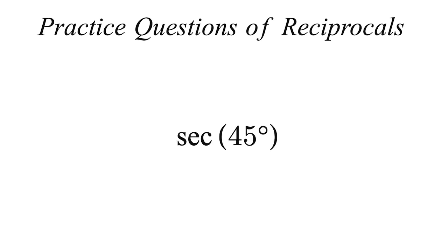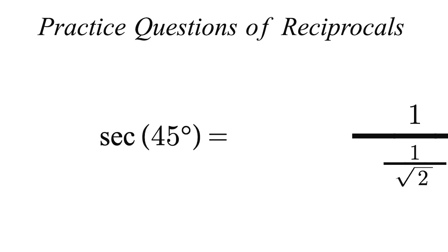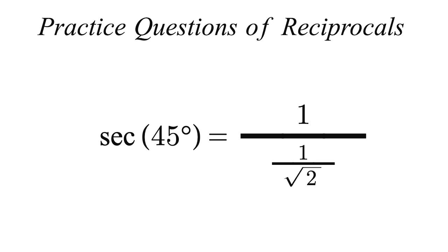Find sec 45. Sec 45 is equal to 1 over cosine 45, which is equal to 1 over 1 over root 2. Again, using the flip method, we know that 1 over 1 over root 2 is equal to root 2. Therefore, sec 45 equals root 2.